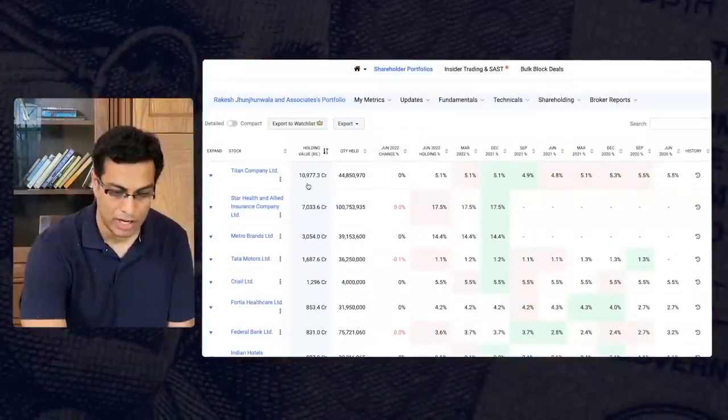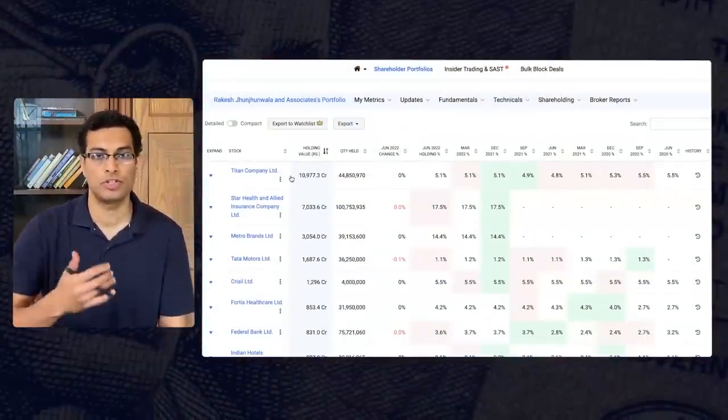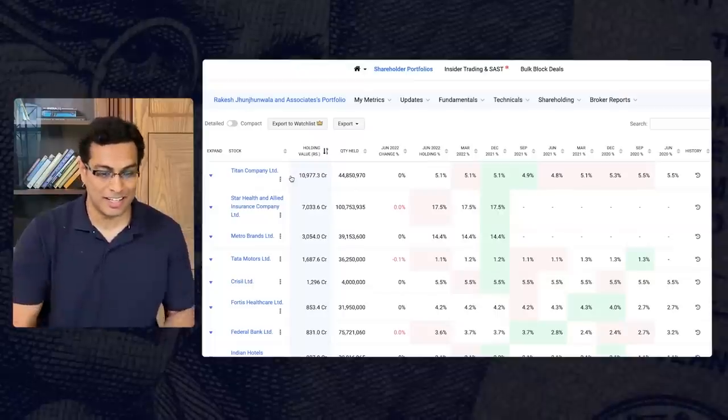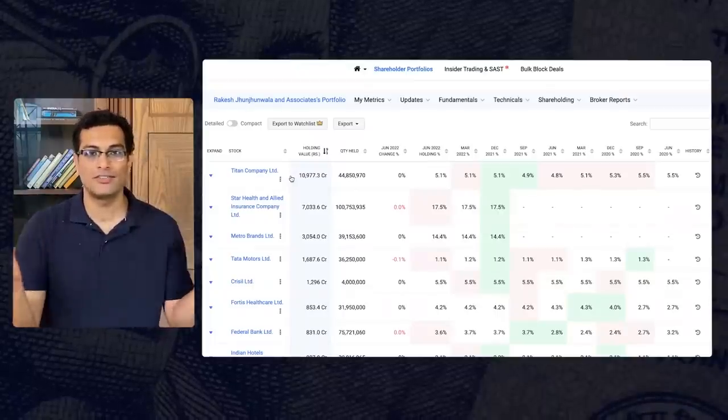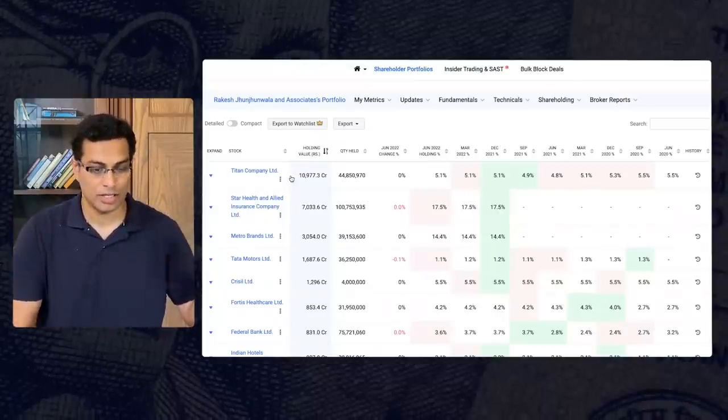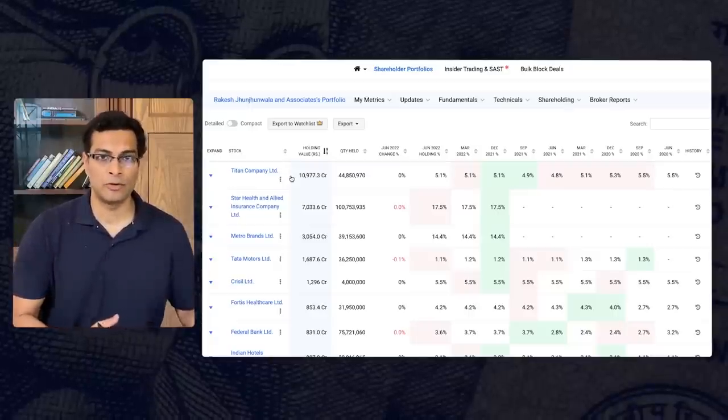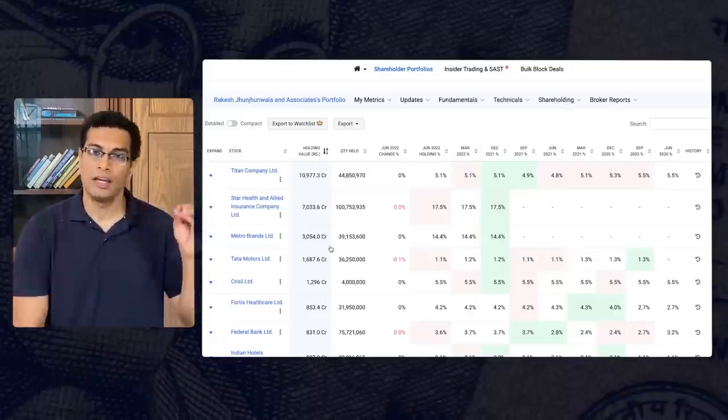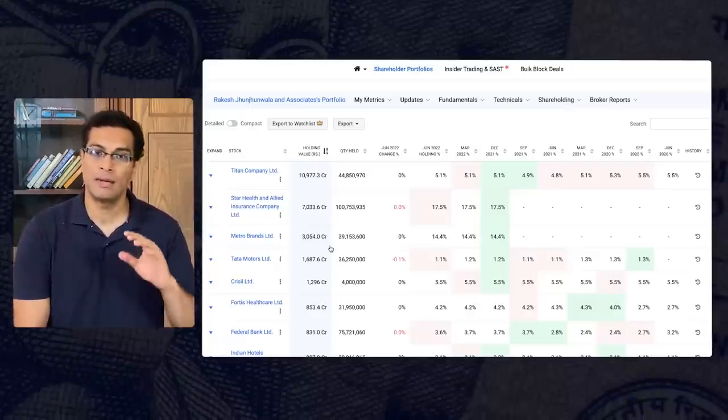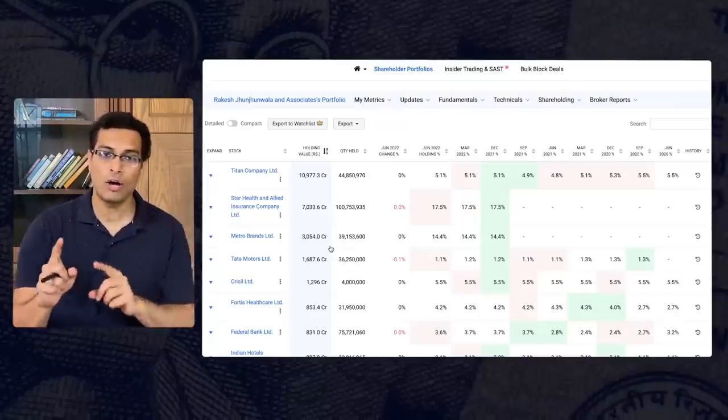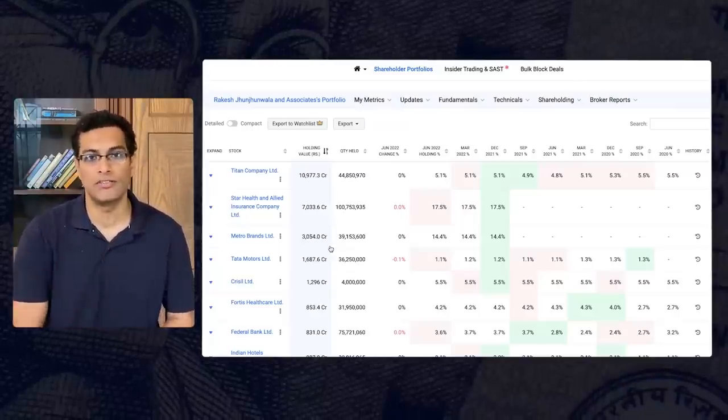Let me also show you the numbers very quickly. If you see from this chart, you can categorically see that he holds the most position in a company called Titan and his portfolio is almost one third Titan, because we looked at the size of the portfolio, approximately 31,000 crore and he has Titan worth 11,000 crore. So highly concentrated portfolio from that particular perspective. If you go down the list, you will see that he has taken a big position in a healthcare company called Star Health. He has also purchased Metro Brands.